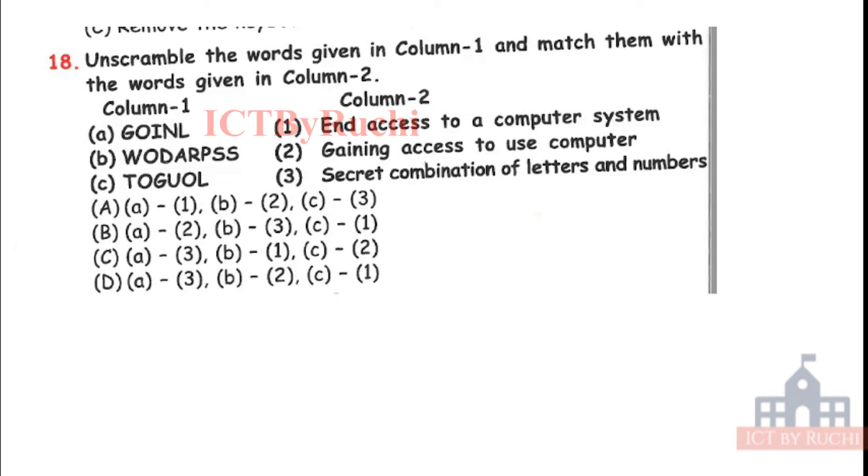Next. Unscramble the words given in column 1 and match them with the given words in column 2. So A, B, C, G, O, I, N, L, V, R, P, S, T, O, G, O, O, L. And we have an option. First, end access to a computer system. Two, gaining access to a used computer, or three, secret combination of letter and number. So tell me out of A, B, C, D which is the correct match. So firstly I will tell you A is login, B is password and C is logout. Login, password, logout. So the answer is B part. That is A cut to, login is gaining access to computer. B is third, this is password. Password is secret combination of letter and number. And the last is logout and access to a computer system. Okay.